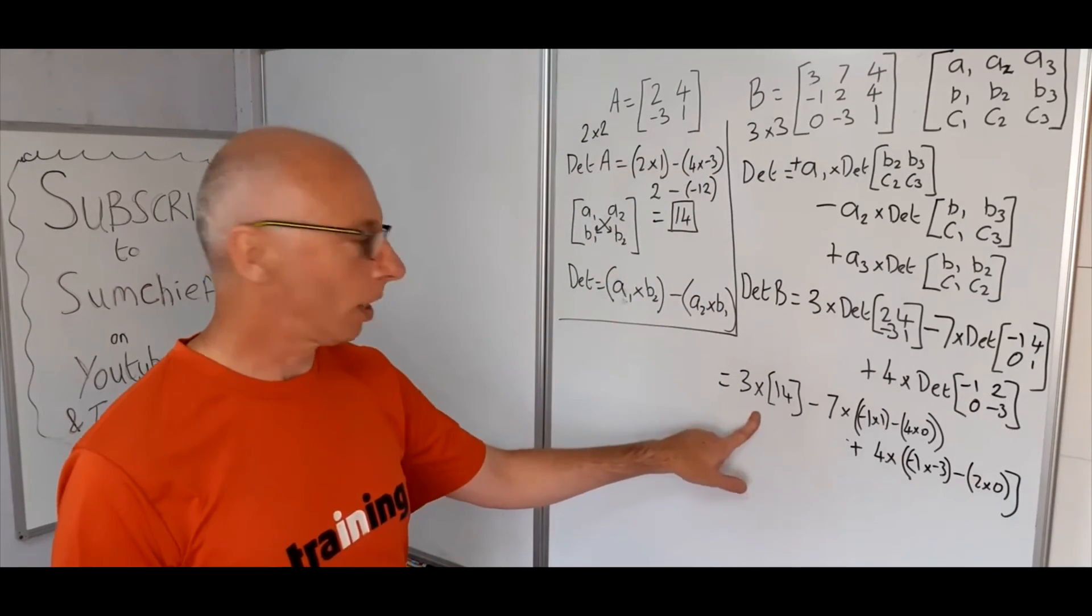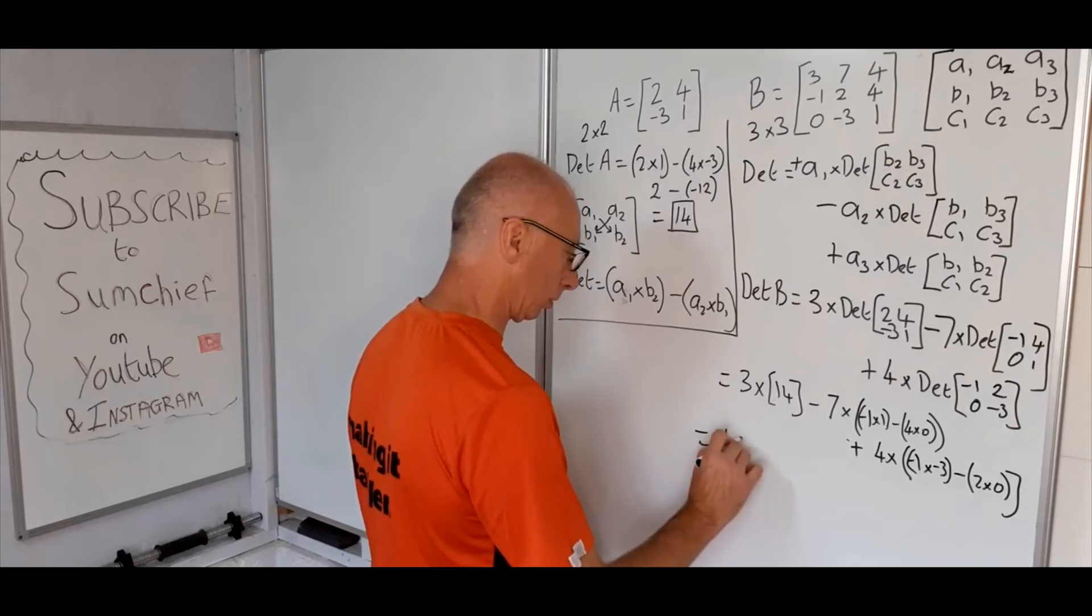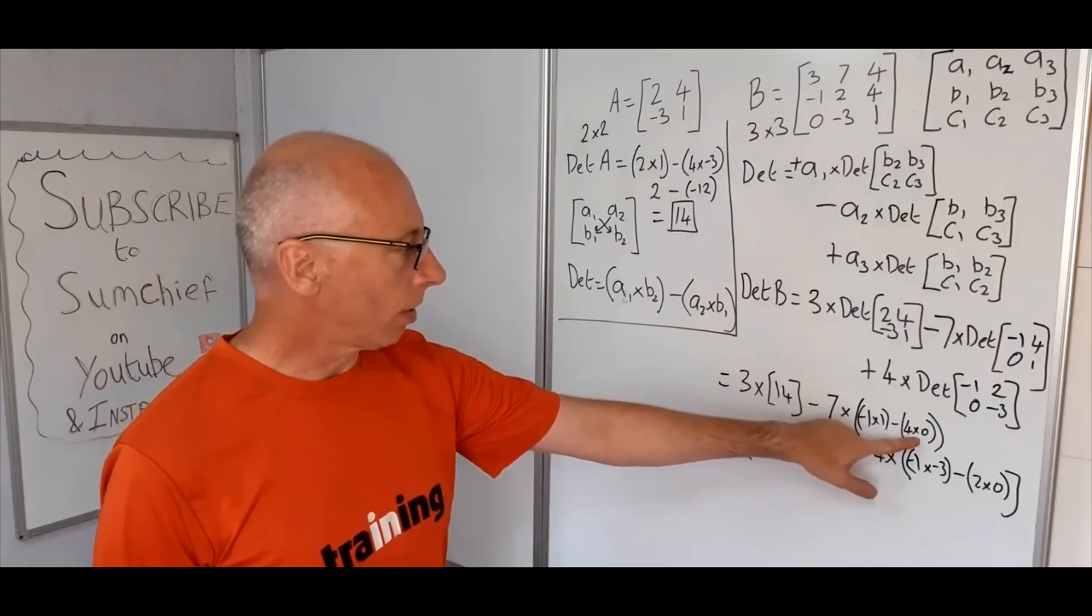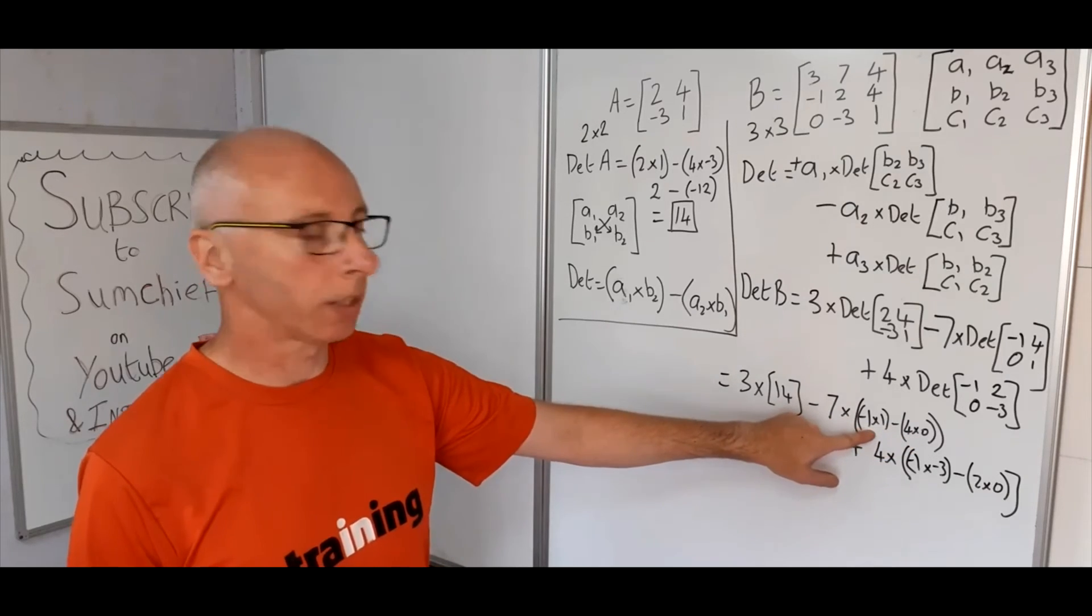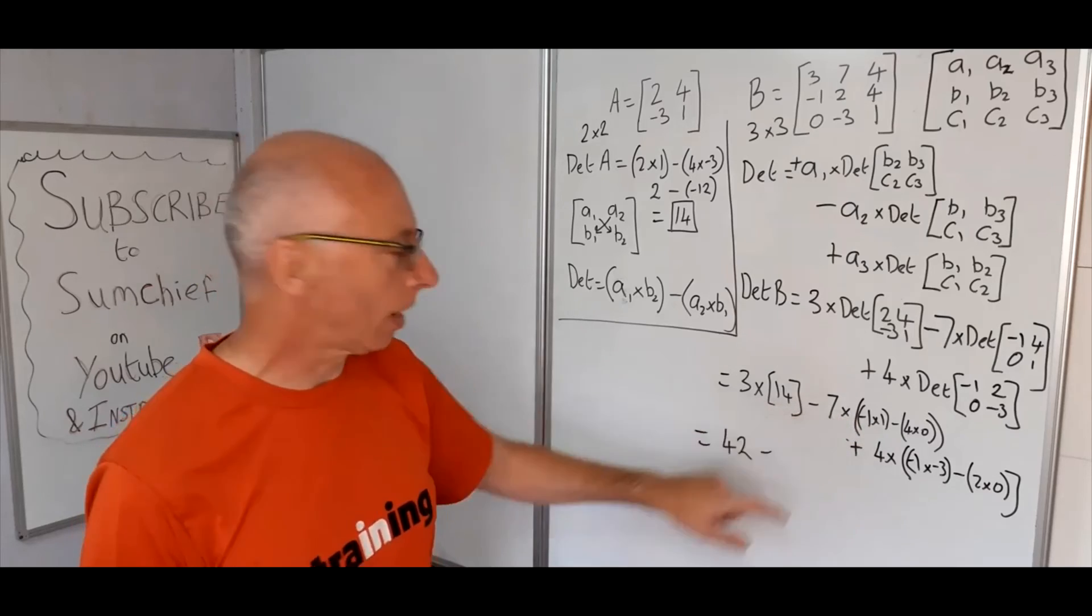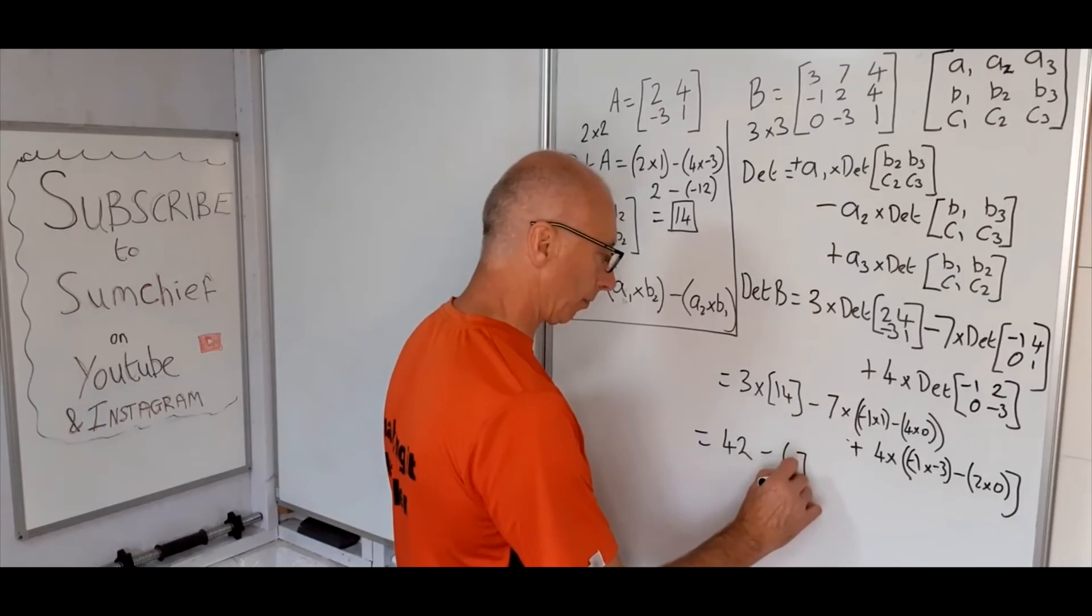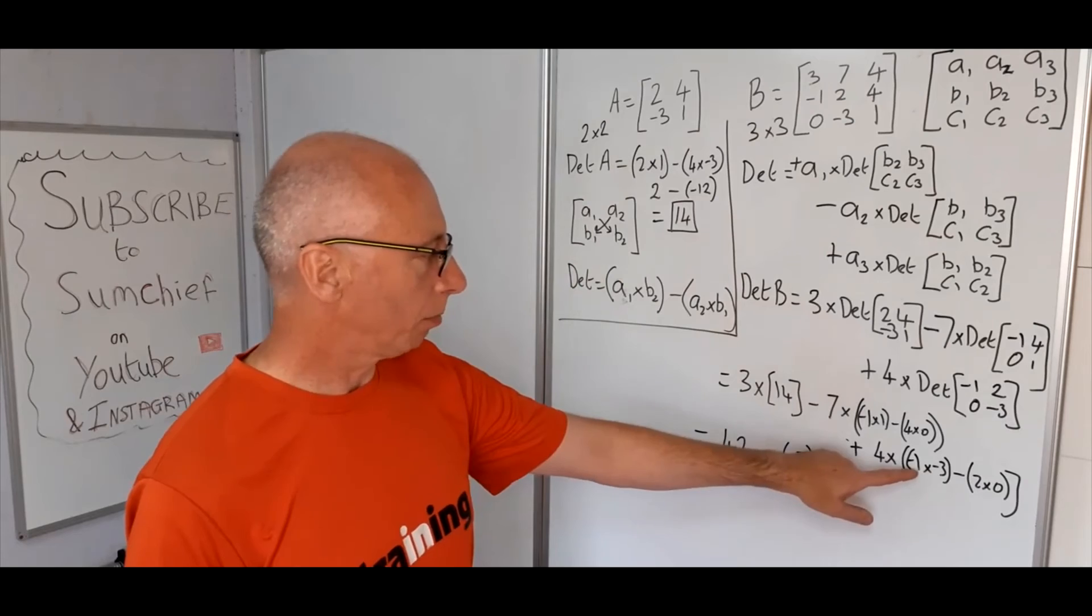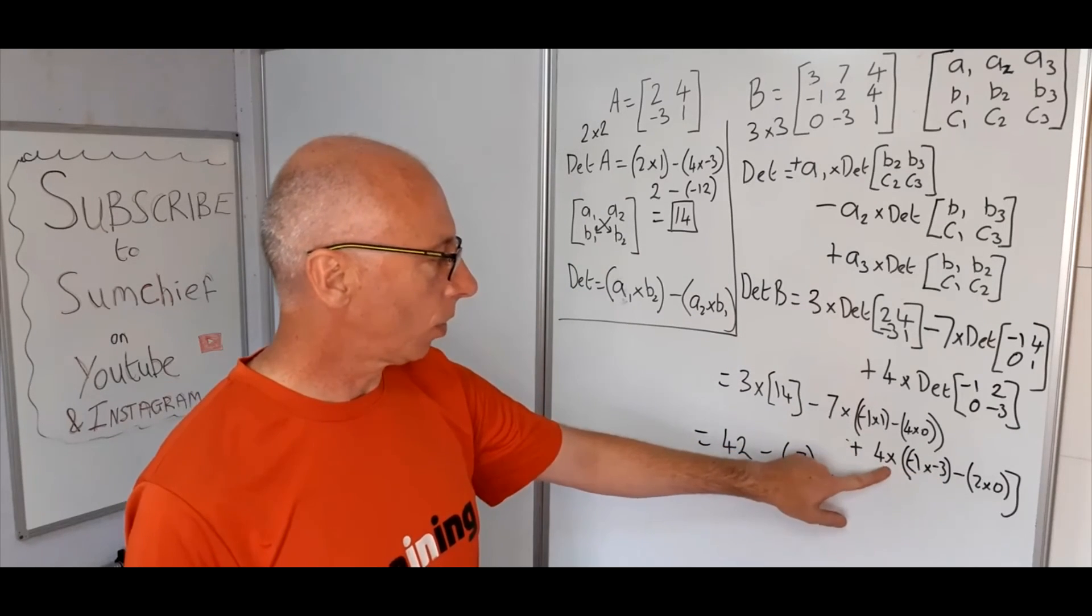Okay, let's simplify up. 3 times 14 is 42. Okay, let's quickly do these in our head because this one's 0 here. So there's nothing to do there. So minus 1 times 1 is minus 1. So that's minus 1 times 7. So minus 1 times 7 is minus 7. And then we're going to add.